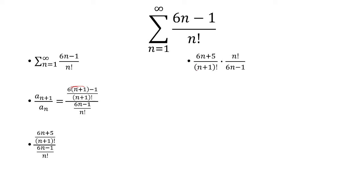Now, n plus 1 factorial can be rewritten as n plus 1 times n factorial. So the n factorial is going to cancel. And I'm left with 6n plus 5 over n plus 1, multiply that by 1 over 6n minus 1.